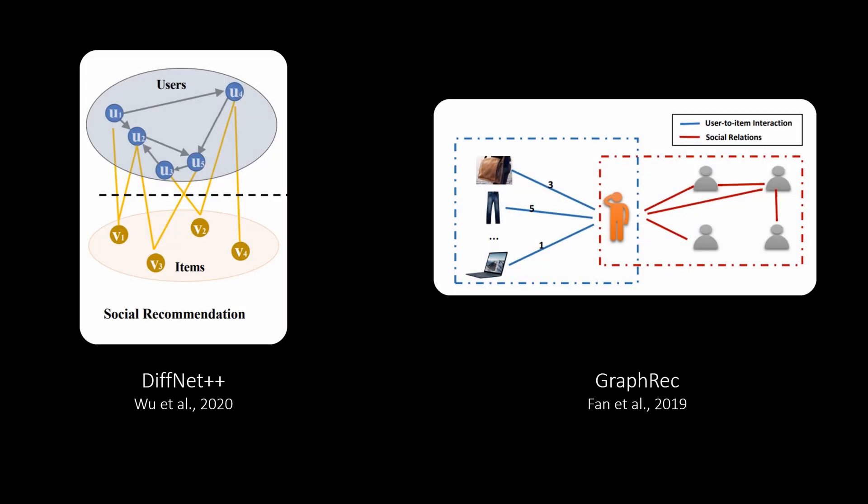So far, we were only looking at bipartite graphs without further information. There are however many works that additionally exploit the social network of the users. This is then typically called social recommendation and it's pretty straightforward. The fundamental idea is that people are most of the time heavily influenced by their friends or colleagues and therefore this relationship can be used to propose better recommendations.